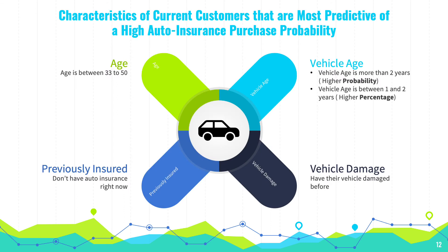In conclusion, customers with a high probability of buying auto insurance share the following profile: their age is between 33 and 50, they don't currently have auto insurance, they have had their vehicle damaged in the past, and their vehicle age is at least more than one year.